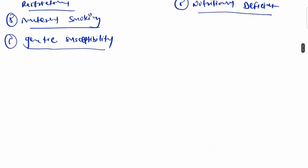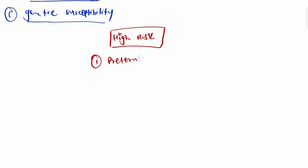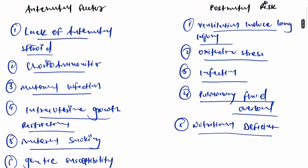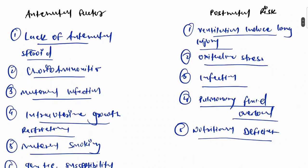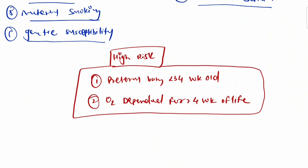The high-risk factors for bronchopulmonary dysplasia are: preterm baby less than 34 weeks old, and oxygen-dependent for more than four weeks of life. These two high-risk factors are the most commonly responsible for bronchopulmonary dysplasia.